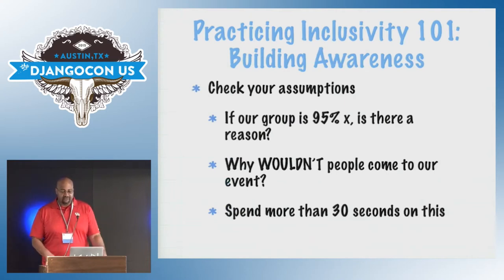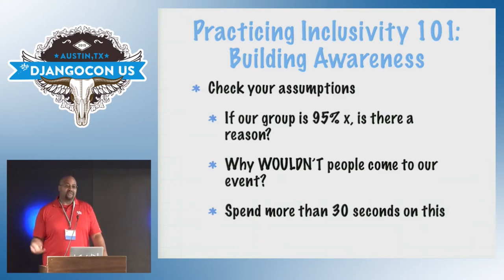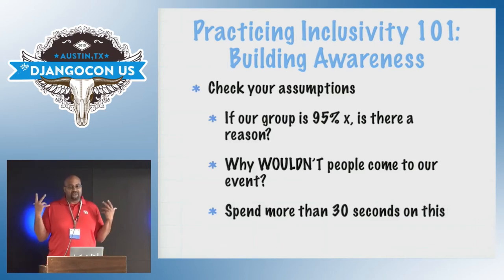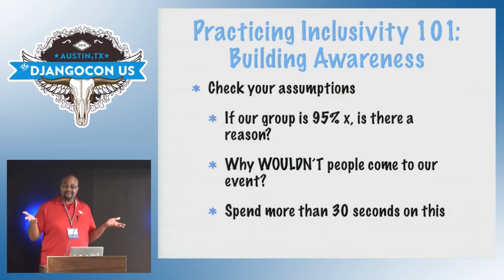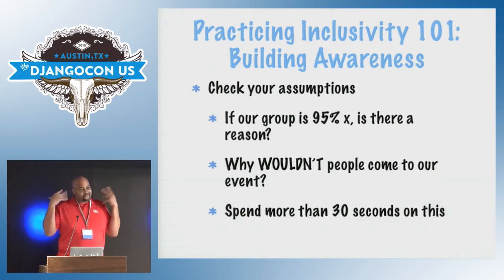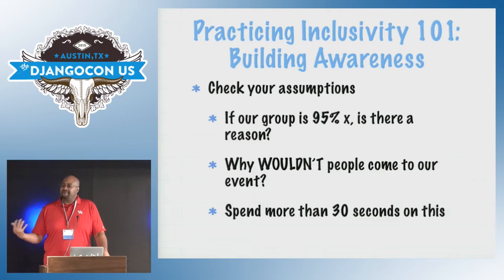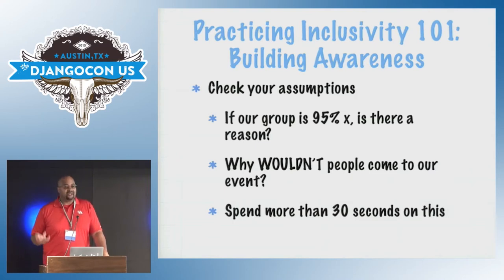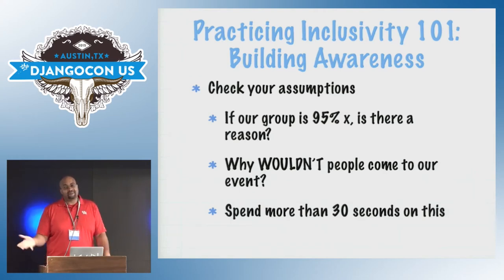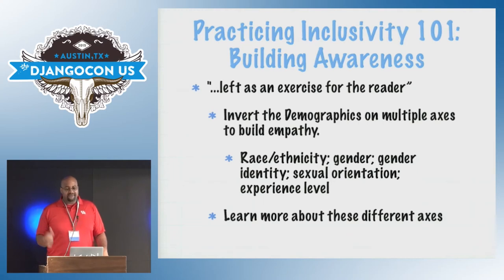Next: check your assumptions. There are certain assumptions that get made. What assumptions are you making about the people who attend your community? If your group is 95% a certain way, do you just assume 'these are the people who like programming, and people who aren't here just don't like it'? Is that really the case, or is that the convenient answer? Is there any reason certain types of people might not want to come to your event? Spend more than 30 seconds on this. The 30-second answer is 'there aren't any women here, so women don't like code' — but that's probably not the actual problem.